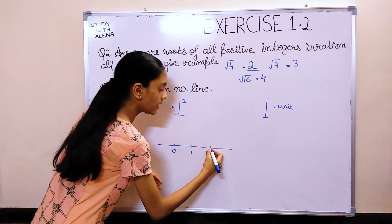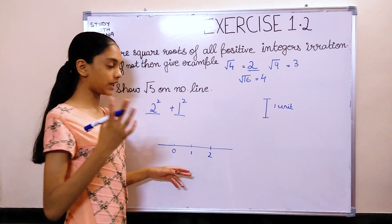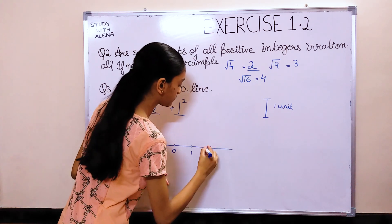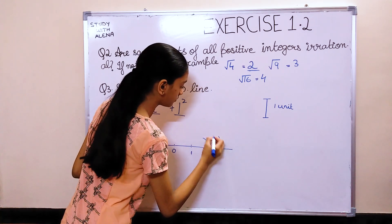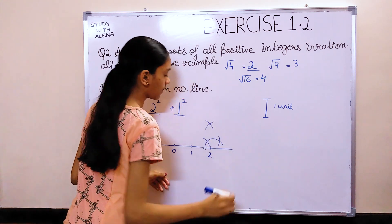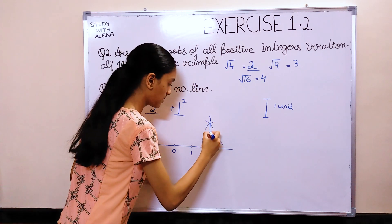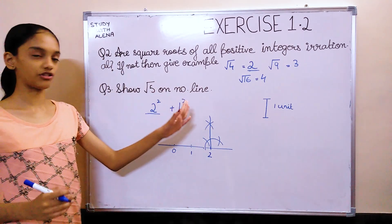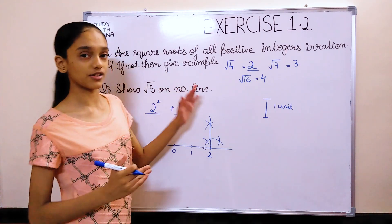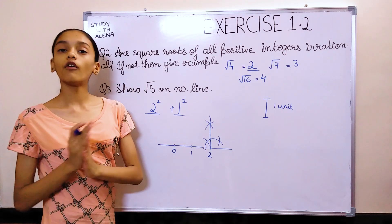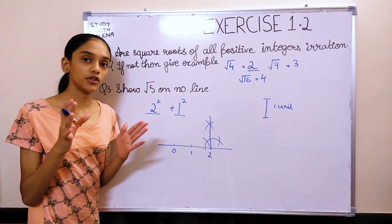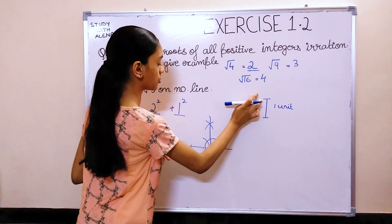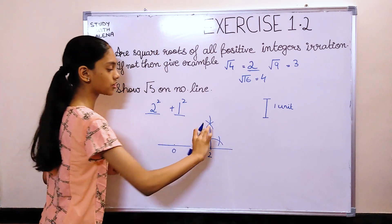Now, from that 2, make a 90 degree angle using a compass. So, it would be like this, something like this. And, draw a straight line. Now, it's not that straight. But, you need to draw a straight line. Now, from here, using your compass, mark 1 unit. So, my 1 unit is this much.